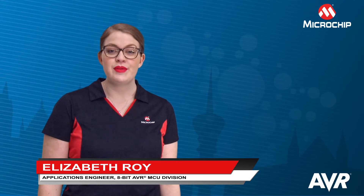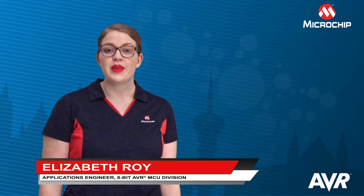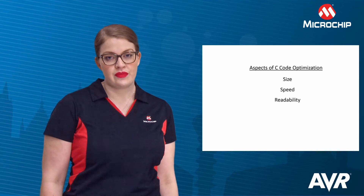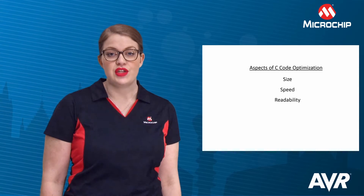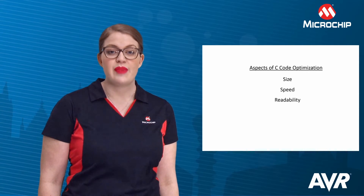Today we're going to talk about optimization of C code with AVR. When working on a complex software project in a team, proper code design is essential. Depending on the application, there may be a requirement for decreased execution time or memory usage, but any changes must not make it harder to understand. This translates to the relevant aspects of C code optimization – size, speed, and readability. Often specific optimization for one of these aspects affects or even degrades the others, so a certain balance is necessary.